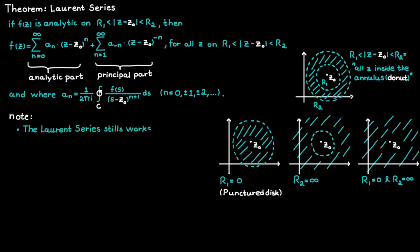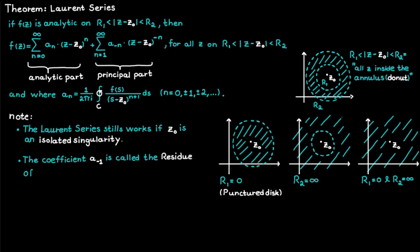That is why Laurent series, unlike Taylor series, still work if the point we are expanding about, c-naught, is an isolated singularity. Another good thing to know is that the coefficient a-minus-one is called the residue of the function f at c equal to c-naught, and this residue will be really useful later on in the course when we start doing contour integrations.